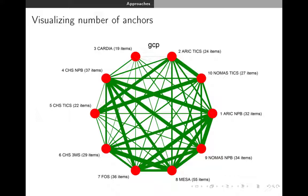Here's one way to visualize the number of items in common between studies. This is a harmonization we did between six cohorts, with a red bubble for each cohort and a green line whose thickness indicates the degree of overlap. For example, the CARDIA study has 19 cognitive tests and the ARIC study has 24 cognitive tests, but there's nothing in common between CARDIA and ARIC. However, the ARIC six-visit has a lot in common with the CHS six-visit — that's fortunate. You can see which cohorts have lots of overlap. This was made in Stata as a network plot.